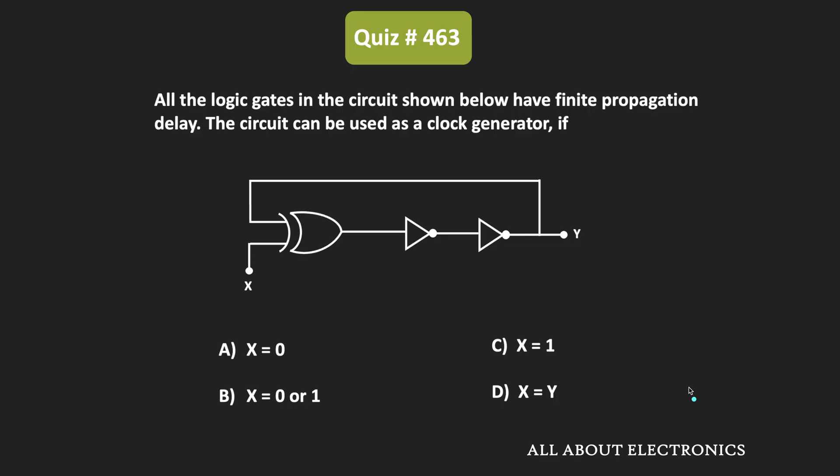Hey friends, welcome to the YouTube channel All About Electronics. So in this question, we have been given this digital logic circuit and we have been given that each logic gate in the circuit has a finite propagation delay. We have been asked to find for what value of the input X this circuit will work as a clock generator.